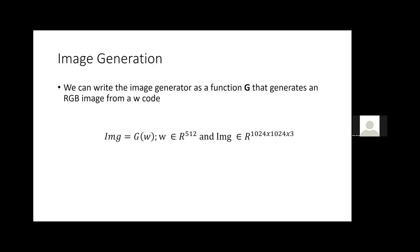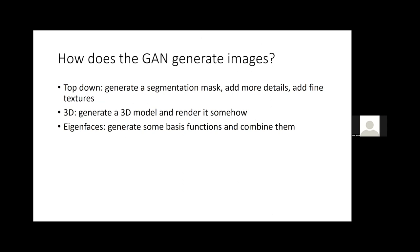Image generation is written as a function G that takes an input W code and generates a 1024×1024 RGB image: image = G(W). There's a question of how the GAN exactly generates the images — top-down, maybe generating segmentation masks first and adding details, or generating some 3D model and rendering it. That doesn't happen automatically unless you use a 3D GAN.